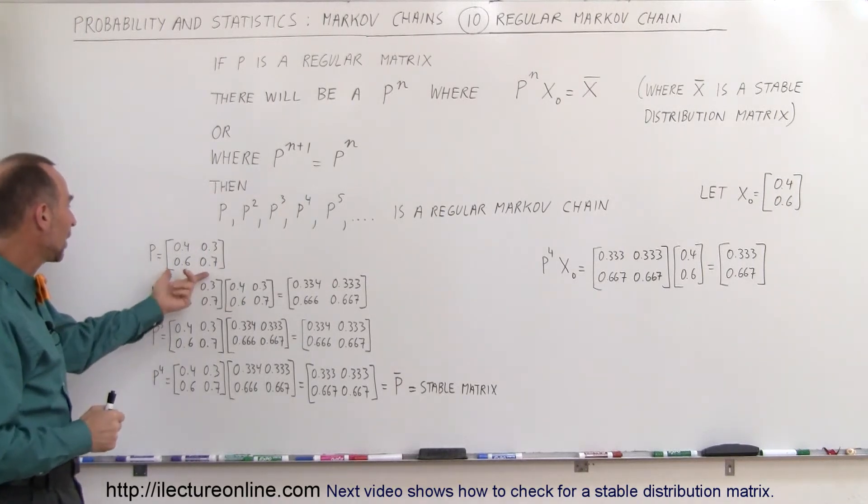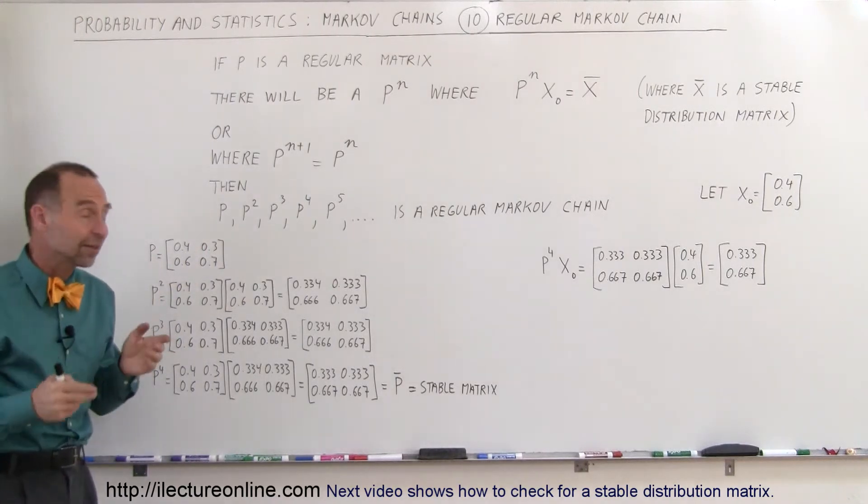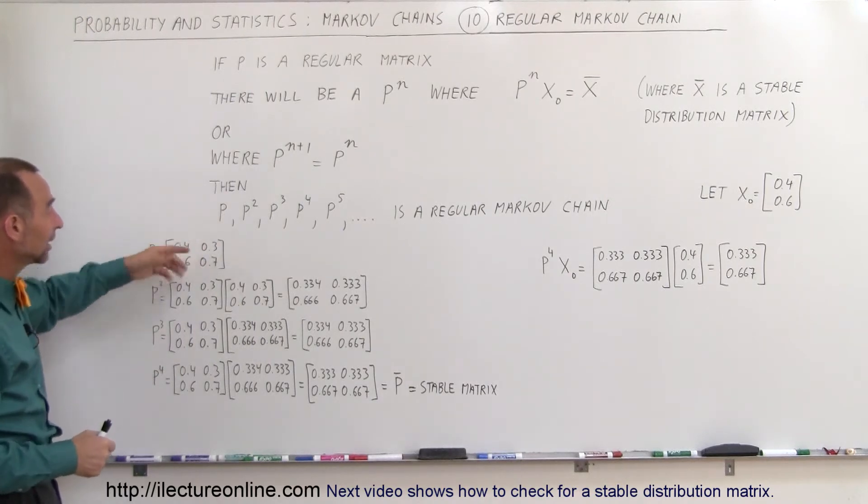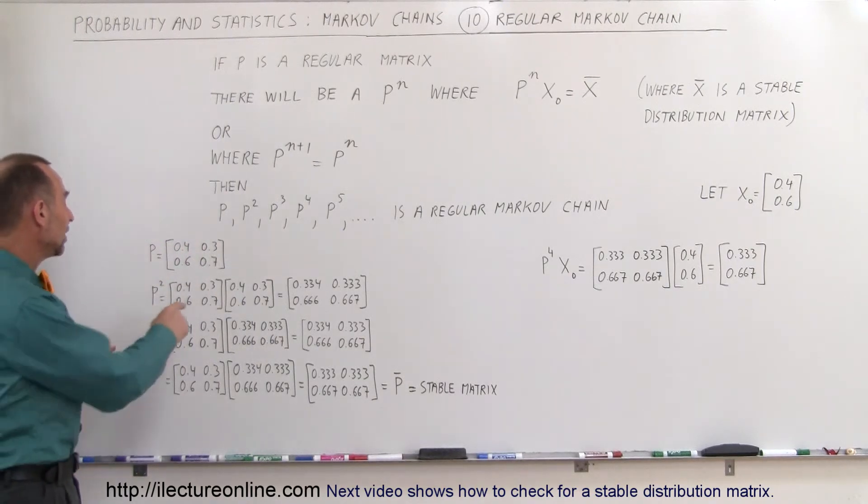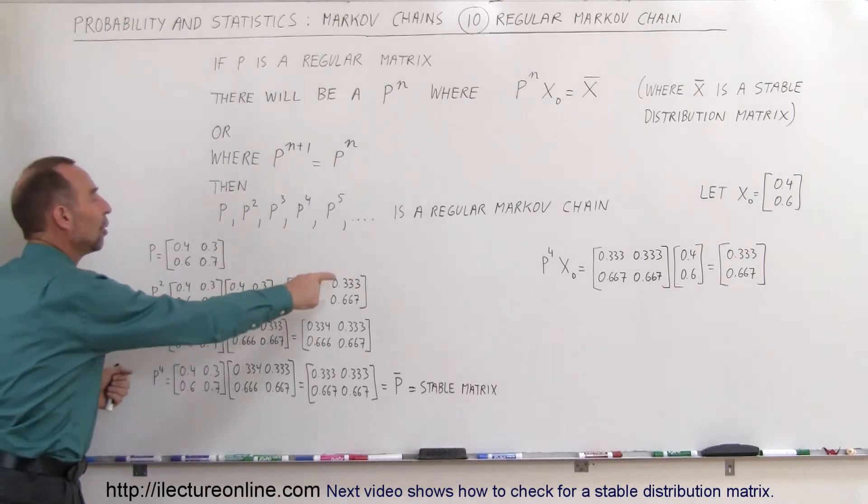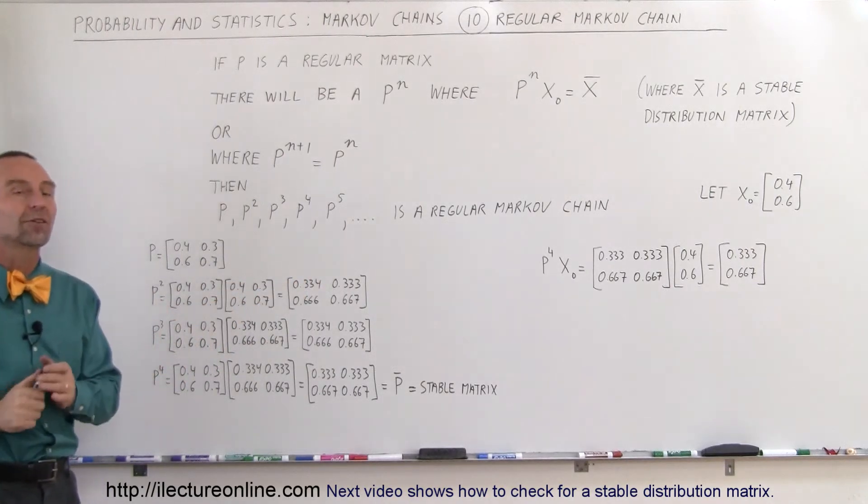So we took a matrix right here. This matrix is stochastic because when we add the elements vertically, they add up to one, and you can see that when we multiply the matrix by itself, we end up with non-zero positive elements.